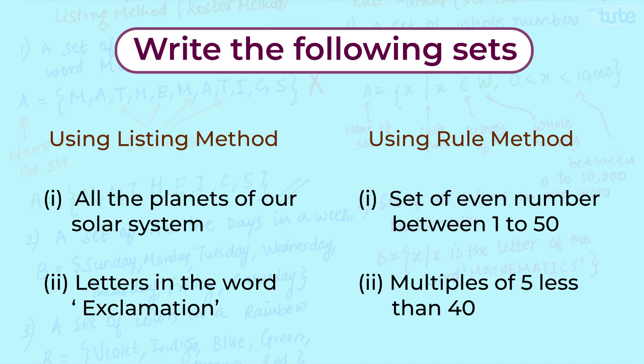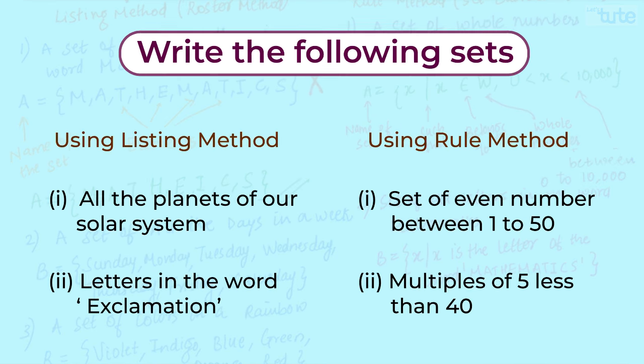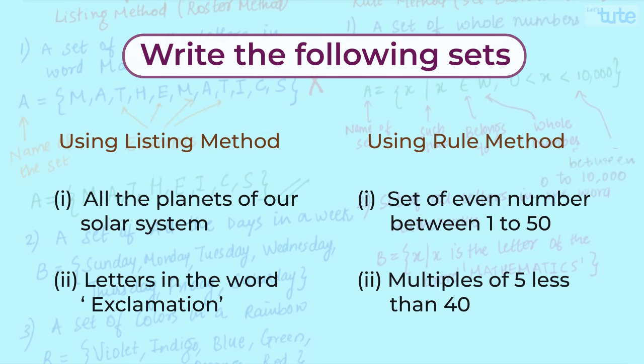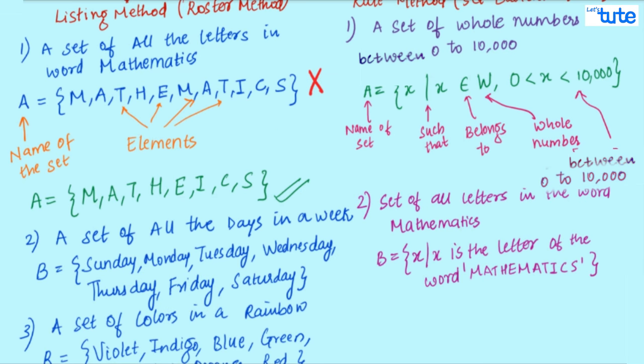Every set can be represented in the set builder form. Try a few of these sets in the form of listing as well as set builder method. Now, why this method is known as a rule method? Now, here we can see that we have added certain conditions in this set. This is the reason why this is also known as a rule method.